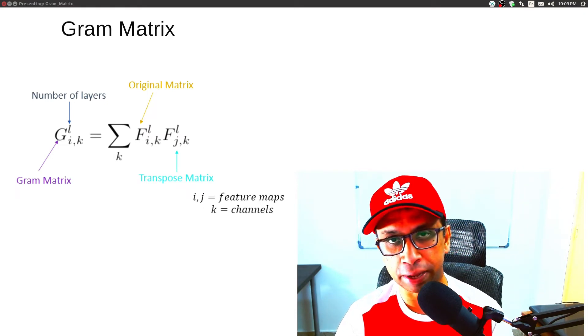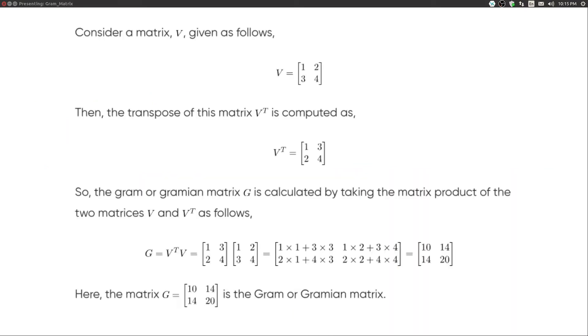All right, let's jump in. In simple words, a Gram matrix is a matrix created by multiplying a matrix with its own transpose. As you can see in this image here, consider a matrix V given as follows.